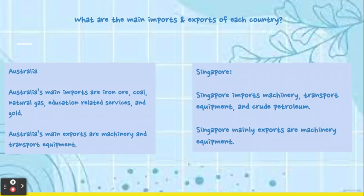Australia's main exports are iron ore and concentrates. Crude petroleum is a yellowish-black liquid — crude petroleum is an oil.